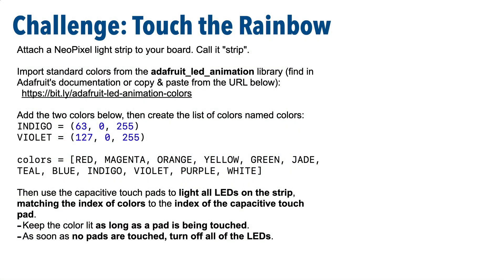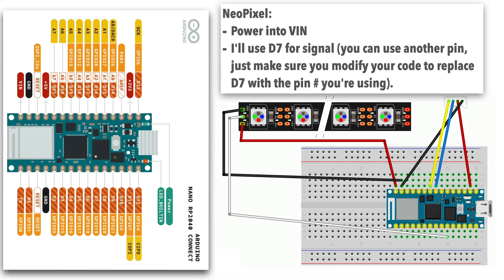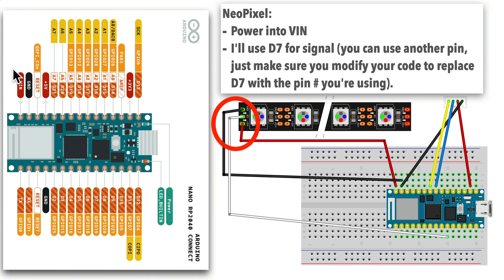I think it's time for a challenge. In this challenge, you should hook up a NeoPixel strip to your board — we showed how to do that in a prior video. Here's a diagram of how I set this up on my Arduino Nano RP2040 Connect. This diagram also shows how I attach the four wires for the STEMIQT connector, but you can ignore that if you don't need it. For the three NeoPixel wires: power is going into VIN, but you can also use the 3.3 volt pin — your strip might be just a little bit dimmer. Ground goes into any GND pin, and I used pin D7 for my signal pin. You can use a different pin that supports digital IO, just make sure you modify your code to refer to that pin instead of D7.